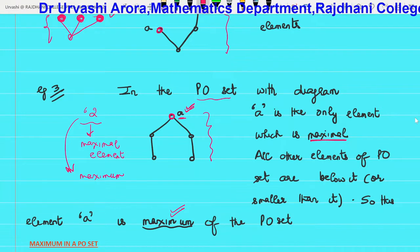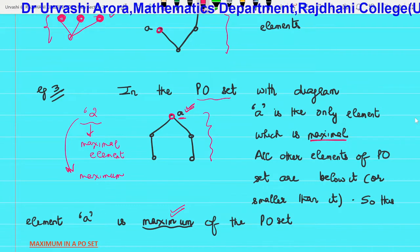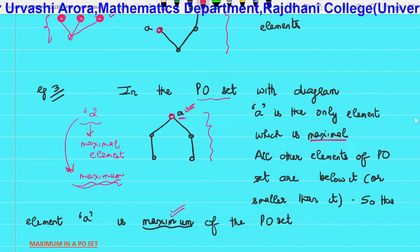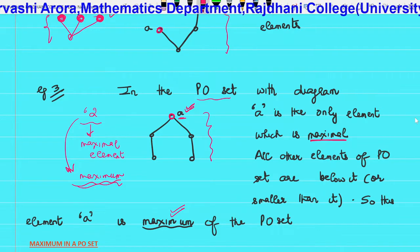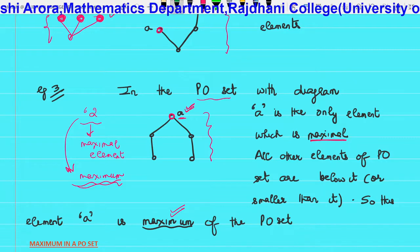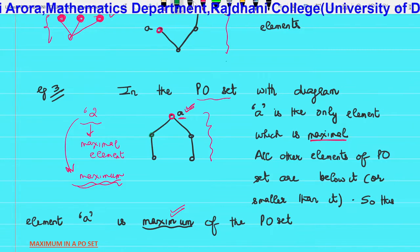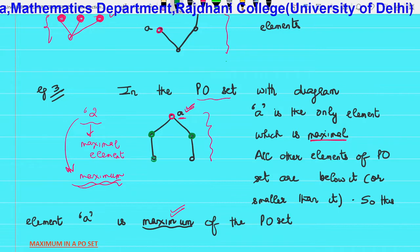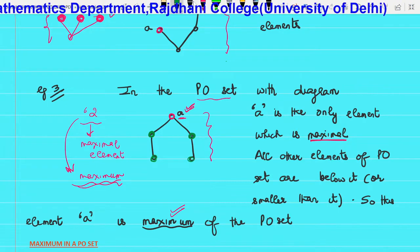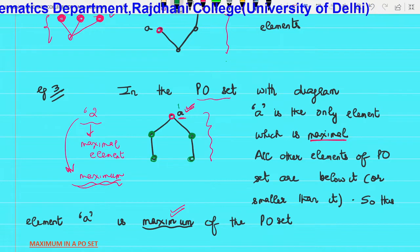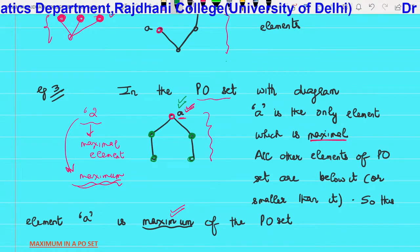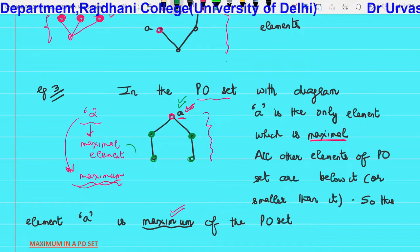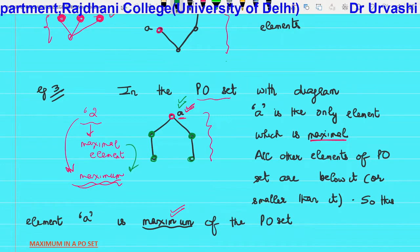This maximal element becomes the maximum when every element of the PO set is below it. We can see every element of the PO set is below A — this element is below A, this element is below A, this element is below A. So when every element of the PO set is below the maximal element, then the maximal element becomes the maximum.